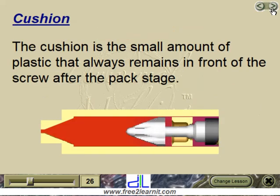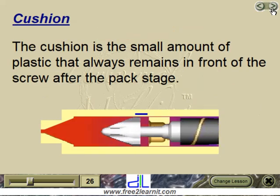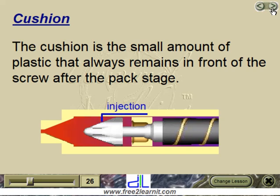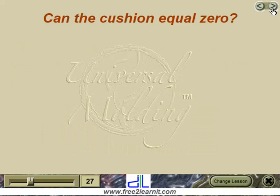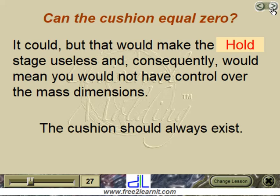Cushion: the cushion is the small amount of plastic that always remains in front of the screw after the pack stage. Can the cushion equal zero? It could, but that would make the pack stage useless and consequently mean that you would not have control over the mass dimensions. The cushion should always exist.